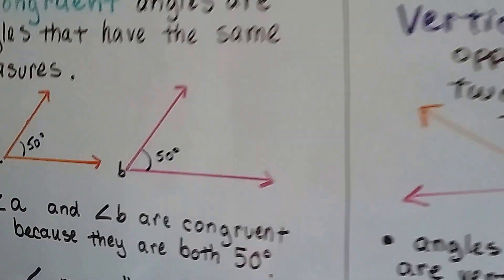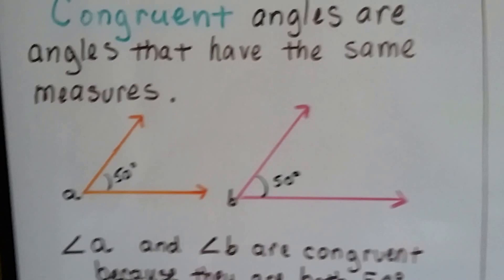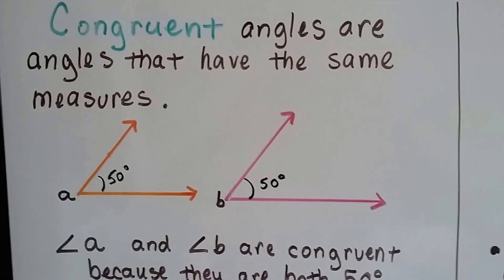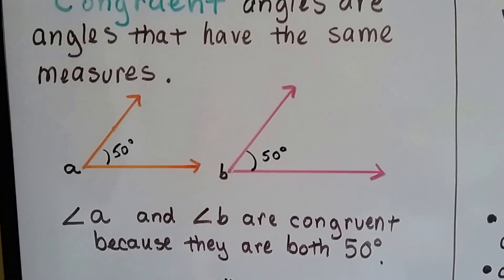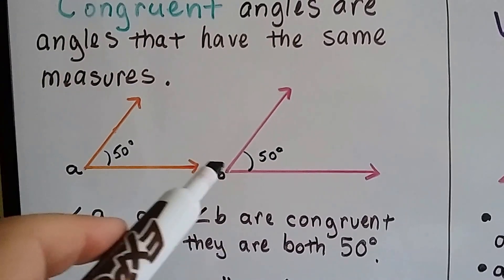So now let's talk about some angle pairs and how they're congruent. These two angles have the same measure, and they're congruent. They're both 50 degrees. This is angle A, and that's angle B.